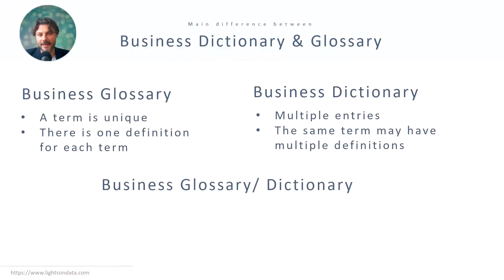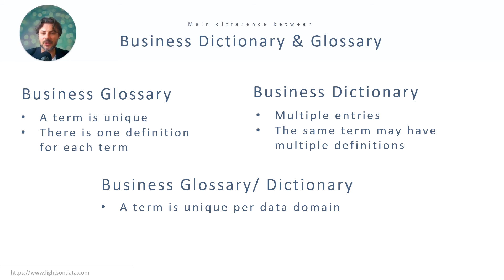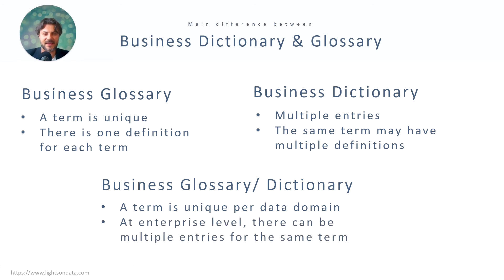On the other hand, it can be a challenge to have unique terms, so some organizations try to marry the two concepts. At the data domain or subdomain level, the same term can only be found once, but when looking at all data domains at the enterprise level, you can find multiple entries for the same term. I still prefer the business glossary route as it reduces the risks of wrong assumptions and misunderstandings, but I recognize that certain organizations have different needs and priorities that can be addressed quicker through a business dictionary.